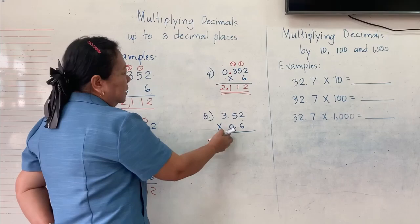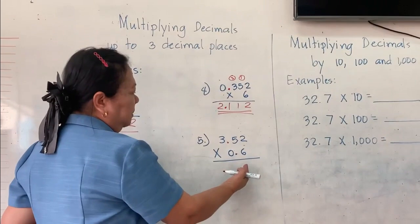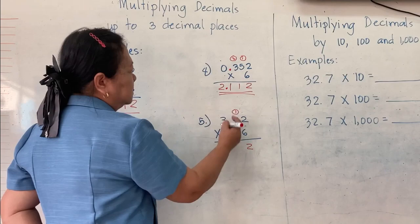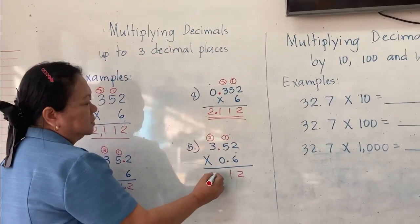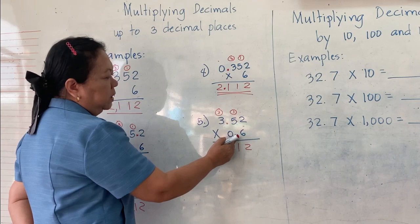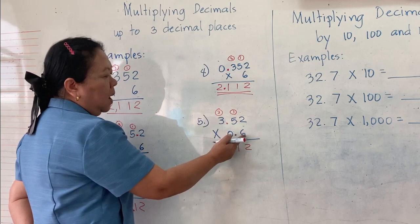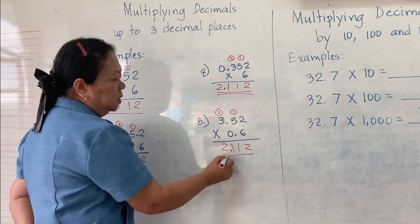Now, for number 5, both the multiplier and the multiplicand have a decimal point. We will multiply again like multiplying whole numbers: 6 times 2 equals 12, carry 1. 6 times 5 equals 30 plus 1 equals 31, carry 3. 6 times 3 is 18 plus 3 is 21. Then we need to count how many decimal places there are — we have 2 decimal points, so we count the digits after each decimal point: 1, 2, 3. Count from the right: 1, 2, 3. The answer is 2.112.